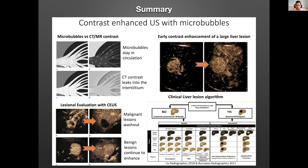This is all summarized from those two papers. If you can remember only a couple of things from this lecture: microbubbles stay in the circulation versus CT/MR contrast which leaks into the interstitium. Malignant lesions wash out; benign lesions continue to enhance. When you see early contrast enhancement of a large liver lesion in a homogenous pattern, it's most likely malignant, but you need to image all the way to four, five, or even six minutes — because HCC can homogenously enhance but will wash out, versus a flash-fill hemangioma or other benign lesions that will show sustained enhancement. I'd recommend reading these papers.